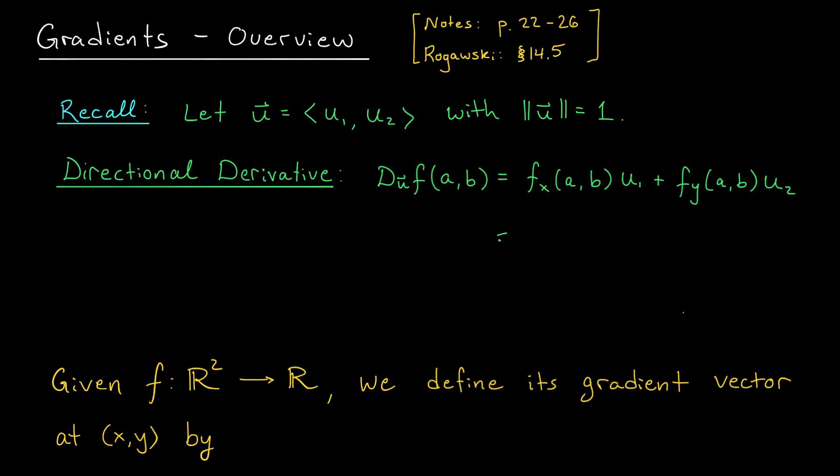And that's exactly what we're going to do. We're going to group them together as entries of a vector fx(a,b), fy(a,b). You may notice that our directional derivative formula is then given by the dot product of this vector of partial derivatives with the vector u1, u2. Pretty simple, right?